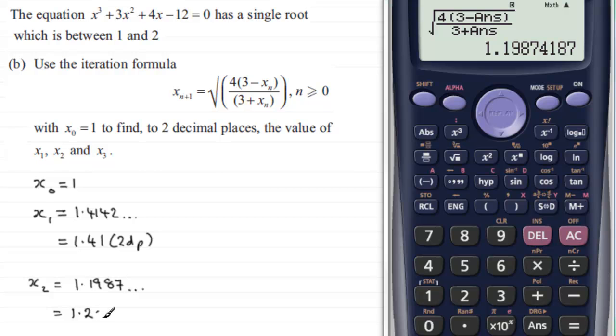And finally for x_3, just press equals again and there we go. x_3 is 1.30999... and so on, which when rounded to two decimal places is going to be 1.31 to 2 d.p.